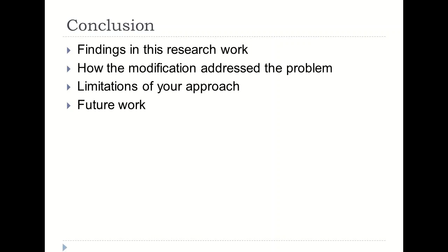With this, we come to the conclusion part of your research. Write about the findings in this research work and how your modification has addressed the problem at hand — not in more than a couple of sentences. You may also mention the assumptions or limitations of your approach and some future directions for further improvement. Future work is important for new researchers who may want to work in your area, it helps get more citations, and it's a reminder for yourself on how to proceed. At this stage you have just performed the experiments and write-up, so you are in a better position to think ahead, and documenting limitations now is a good option.